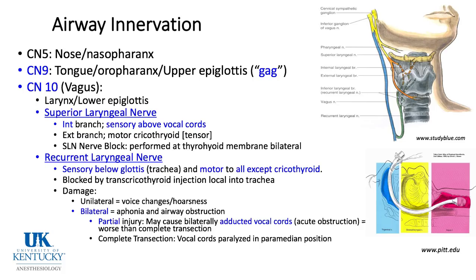The vagus nerve divides into the superior laryngeal nerve, shown in orange. It has two branches: the internal branch pierces the thyrohyoid membrane and supplies sensation above the vocal cords. The external branch is motor to the cricothyroid muscle — a tensor. If you damage this nerve, you can get a wispy voice but not airway obstruction. The superior laryngeal nerve can be blocked at the thyrohyoid membrane bilaterally by injecting local anesthetic near where the internal branch enters.